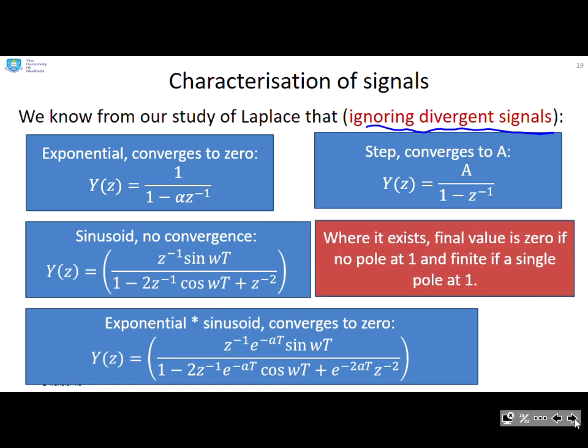Here's a simple summary for you. Where it exists, we're not considering divergent signals or sinusoids. The final value is 0 if there's no pole at 1. These poles are not at 1. But if the pole is at 1, then you can get a finite steady state value. That's the basic characterization before we start.